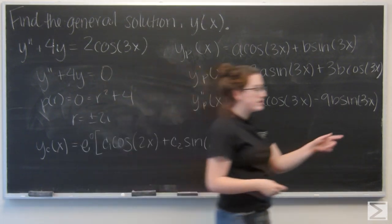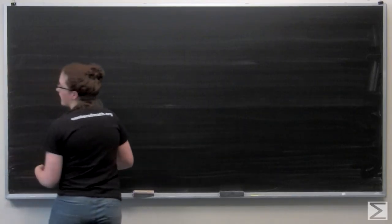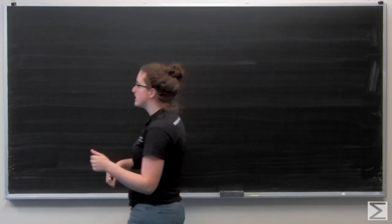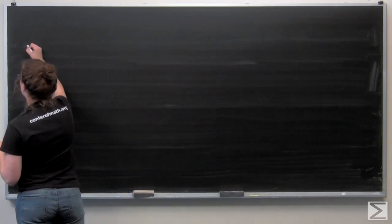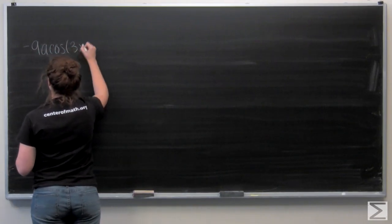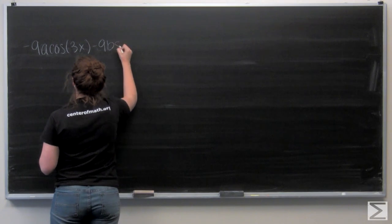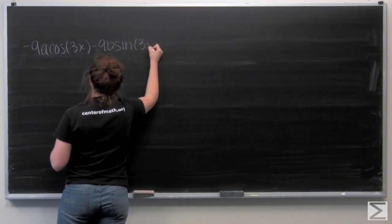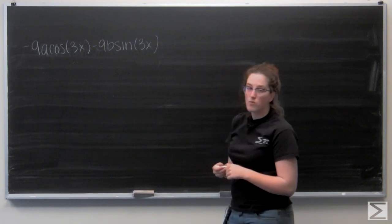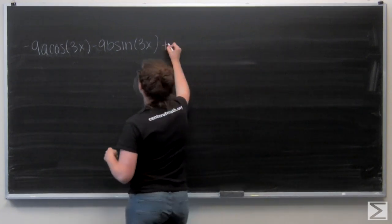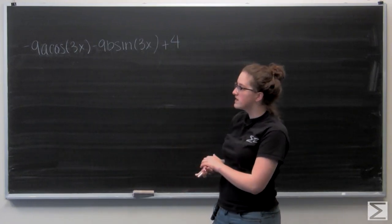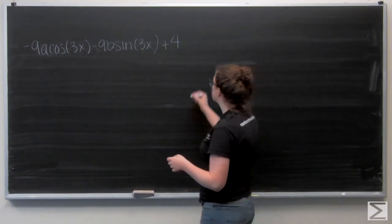I'm going to move over here. So I have y double prime plus 4y equals 2 cosine of 3x. So let me start by writing down y double prime. And I want to add 4y. I'm going to go and distribute that 4. So I'm going to have 4a cosine 3x plus 4b sine 3x.